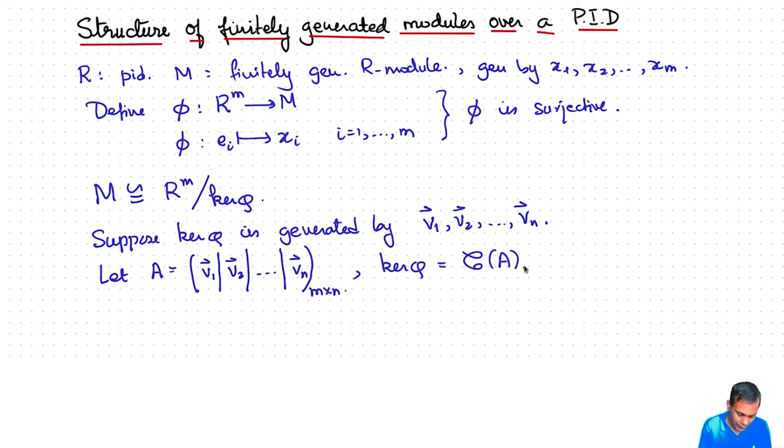So what we have is M is isomorphic to R^m mod the column space. We have expressed our finitely generated R-module in terms of a finite set of generators and a finite set of relations which we have represented by this m by n matrix. Now we know that R^m mod column space of A is isomorphic to R^m mod column space of B if and only if A is equivalent to B.